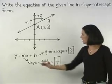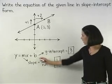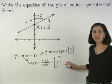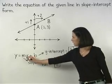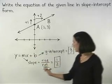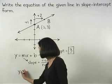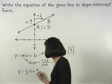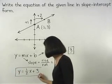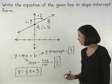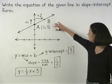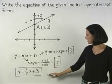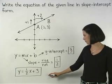Therefore, m equals one-half and b equals 3. And we substitute these values into our formula for m and b to get y equals one-half x plus 3. So the equation of the given line in slope-intercept form is y equals one-half x plus 3.